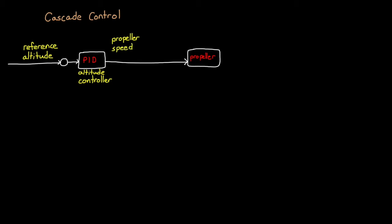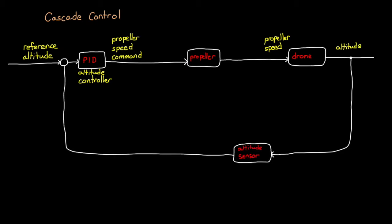This is commanded to the propeller, which begins to spin up, and the output for this block is the true propeller speed. The propeller speed generates a force that acts on the drone, adjusting the altitude. Finally, the altitude is measured by a sensor and fed back into the comparator at the beginning. This is our classic feedback loop, and it has a single PID controller like we're used to.